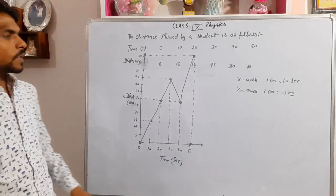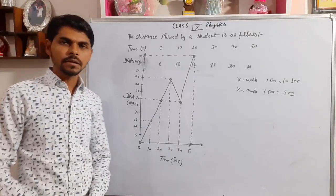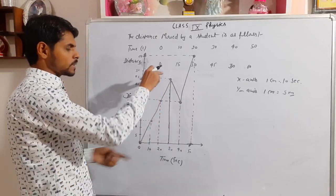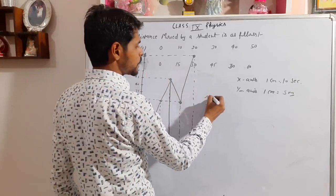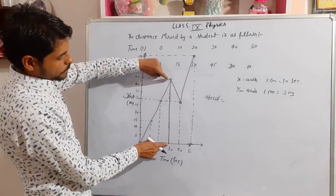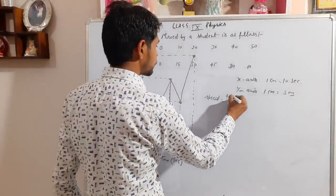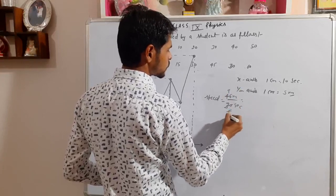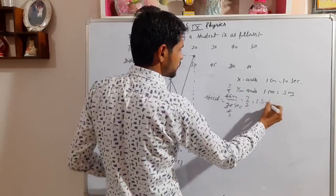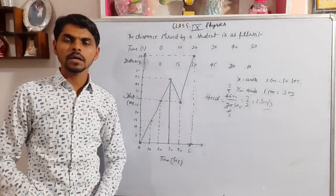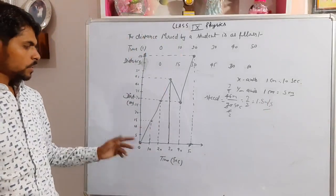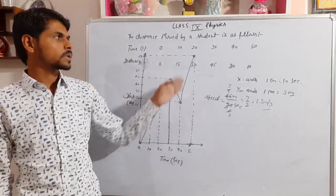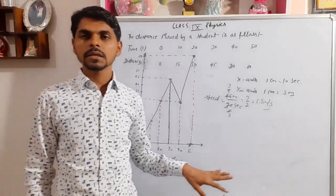Through this graph we can calculate many values. To find the speed for the first 30 seconds, draw a perpendicular at 30 seconds. The perpendicular is 45 meters and the base is 30 seconds. Speed equals 45 divided by 30, which is 1.5 meters per second. Up to 30 seconds the motion is uniform; after that it is non-uniform. Overall, this graph represents non-uniform motion.